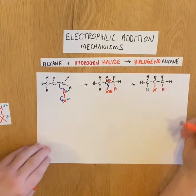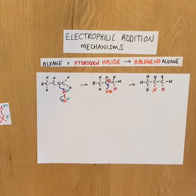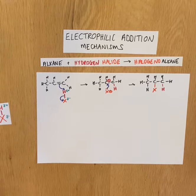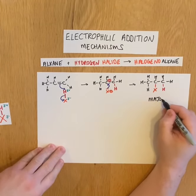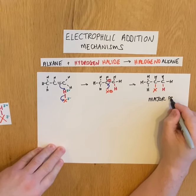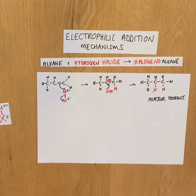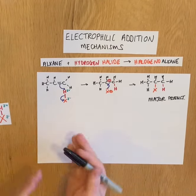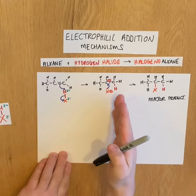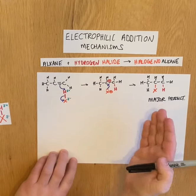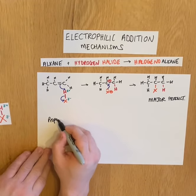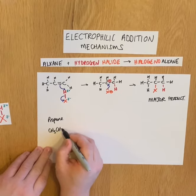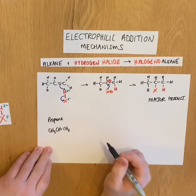The major product forms because the more stable secondary carbocation forms preferentially. You could be asked to draw a mechanism for the minor product — all you have to do is shift the hydrogen to the middle carbon, giving a primary carbocation, and then have the halogen snap in.